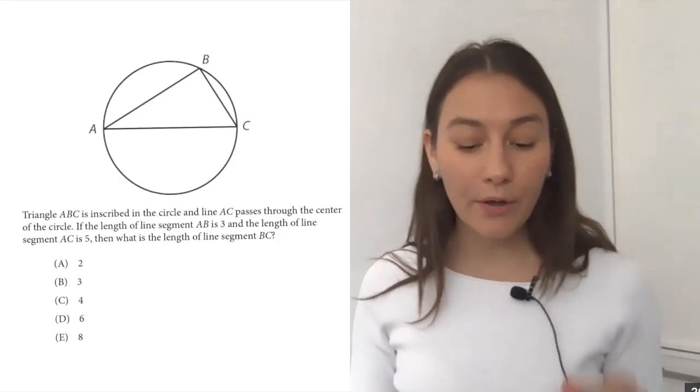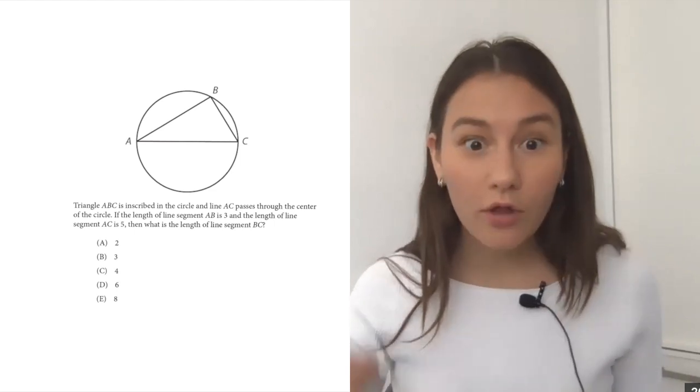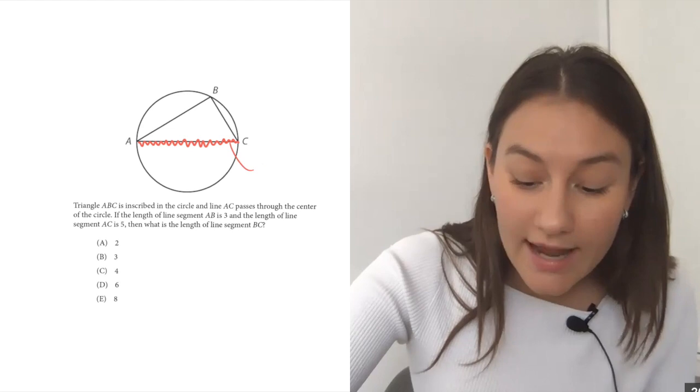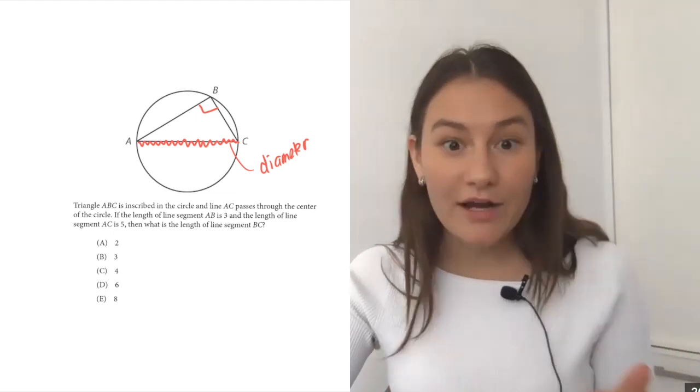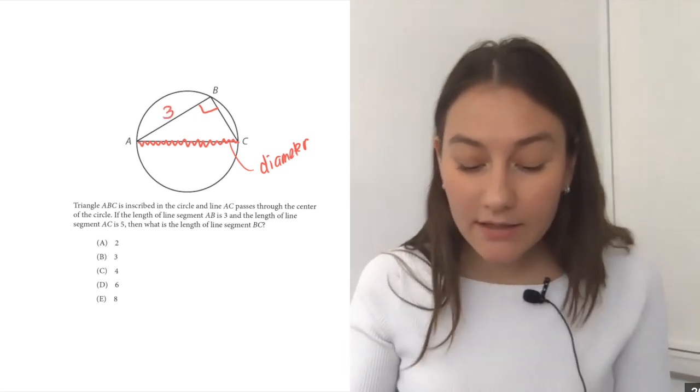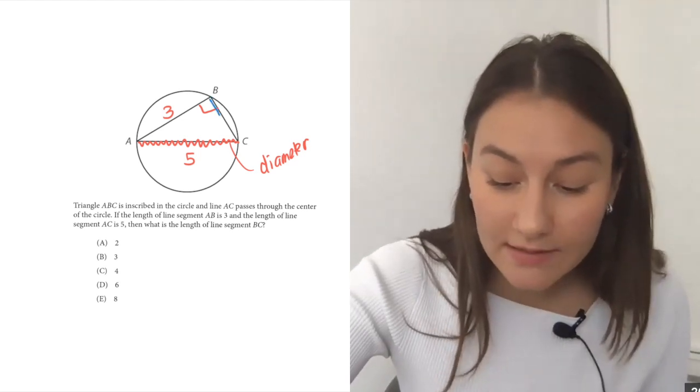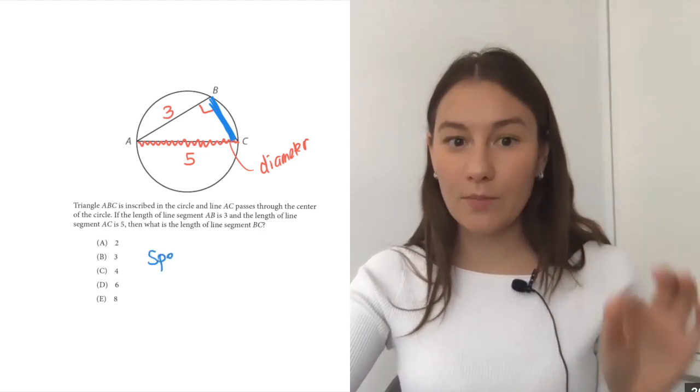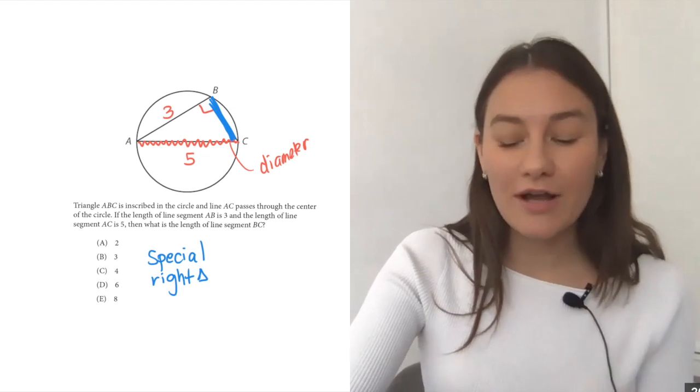So let's take a look at an example. Triangle ABC is inscribed in the circle and line AC passes through the center of the circle. Cool, there we go, it passes through the center. This side of the triangle is going to be the diameter. If that's the case we just learned that angle B is going to be 90 degrees. Great, I have a right triangle. Triangle ABC is a right triangle. If the length of line segment AB is 3 and the length of line segment AC is 5, what is the length of BC? So we're looking for BC, this side here.